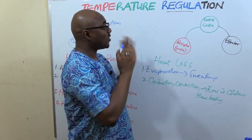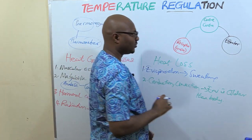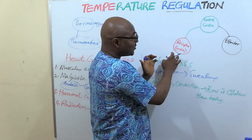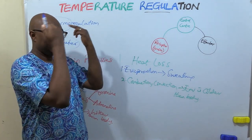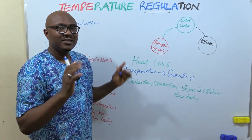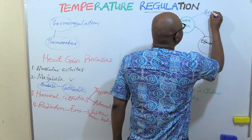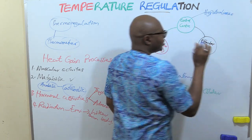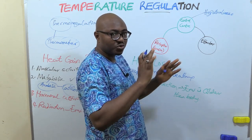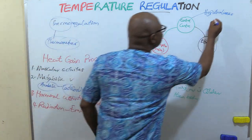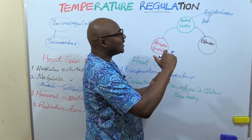Welcome back. Now we're going to look at the real mechanism of temperature regulation based on those components of control systems. Let's start with the control center. We have two kinds of receptors and the control center itself has two parts. The control center is located in a particular part of the brain called the hypothalamus. Within the hypothalamus, you have the posterior side and the anterior side.